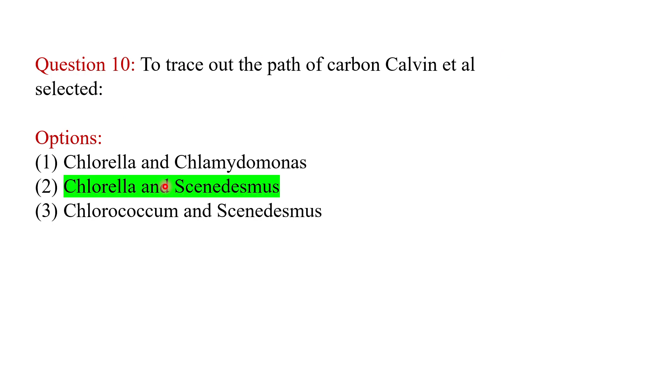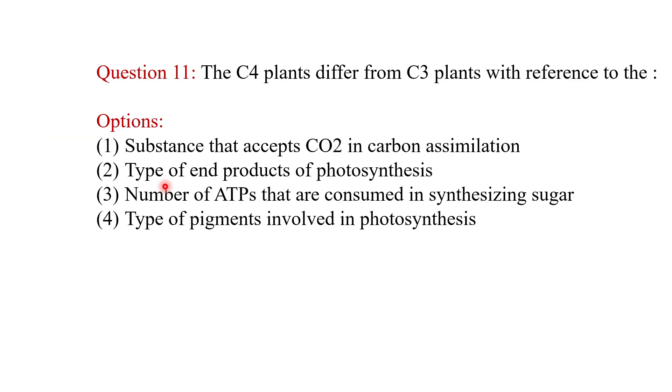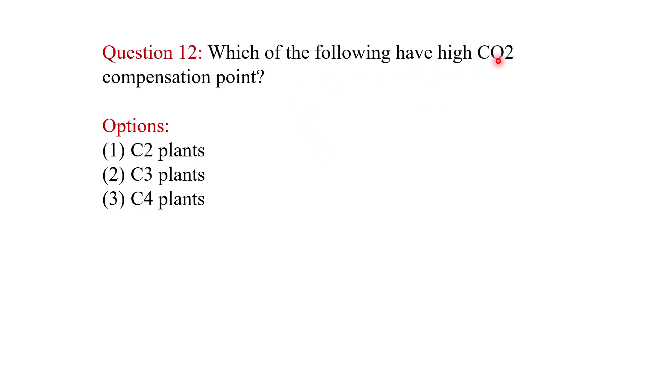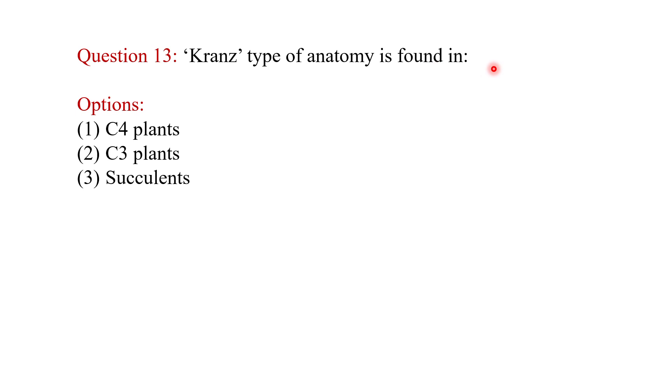C4 plants differ from C3 plants with reference to the substance that accepts CO2 in carbon assimilation. Which of the following have high CO2 compensation point? The answer is C3 plants. Kranz anatomy is found in which plant: C4 plants, C3 plants, or succulents? The answer is C4 plants. They have bundle sheath and mesophyll cells both.